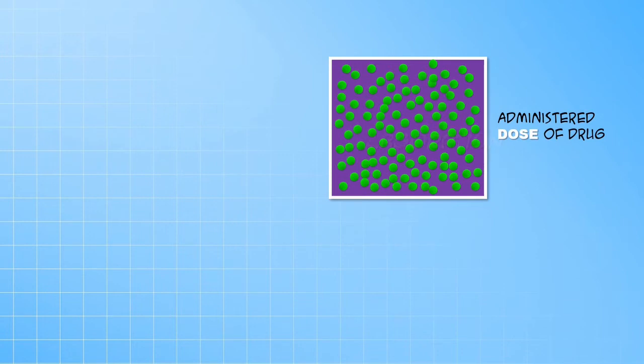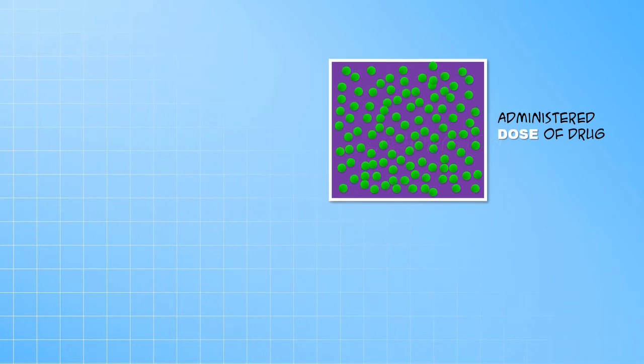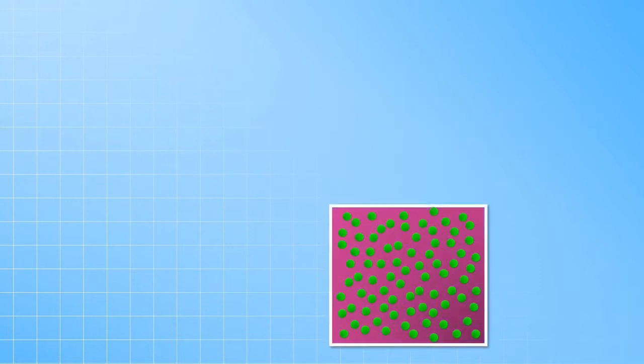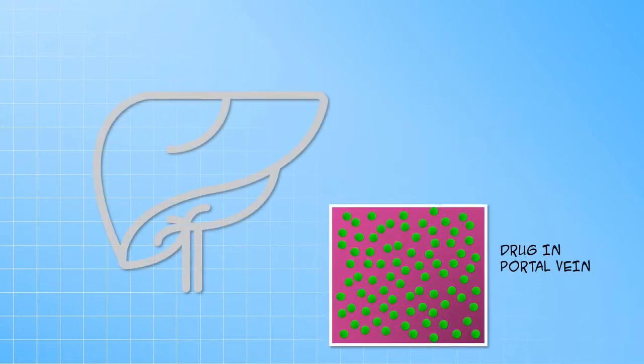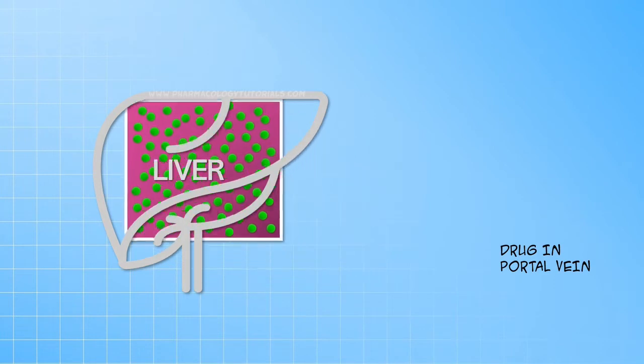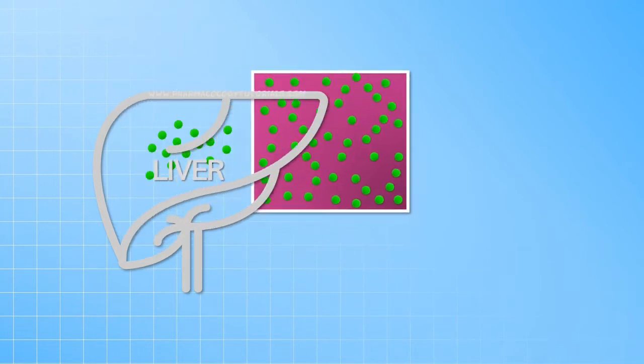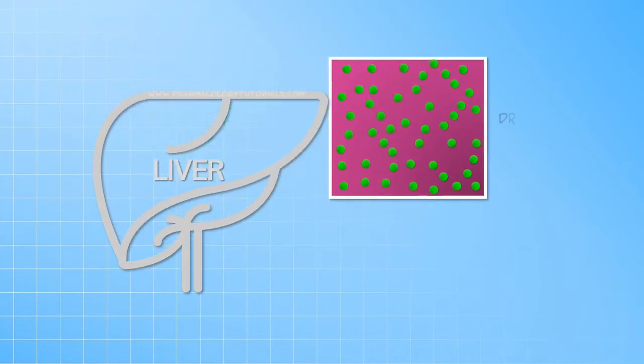There is always the potential for some drug to be lost at every step of the process. Some drug is lost even during the absorption into the portal venous system which forms the drainage of the gastrointestinal tract. Drug molecules then face an even more formidable barrier which is the liver. During passage through the liver, even more drug is lost to the metabolic action of liver enzymes. This is called the first-pass metabolism.